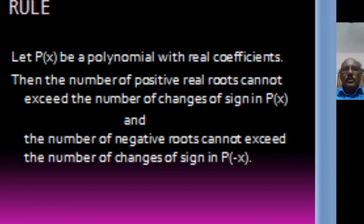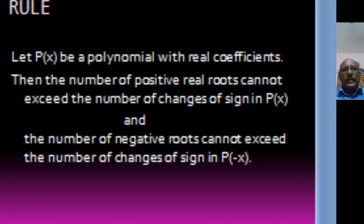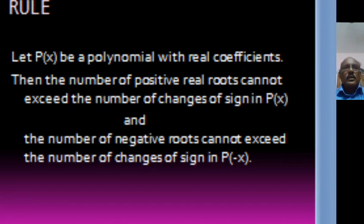And the number of negative roots cannot exceed the number of changes of sign in P of minus X. So in P of minus X, we find the number of changes. Suppose S is the number of such changes of sign, then the number of negative roots is less than or equal to S. This is Descartes' rule.